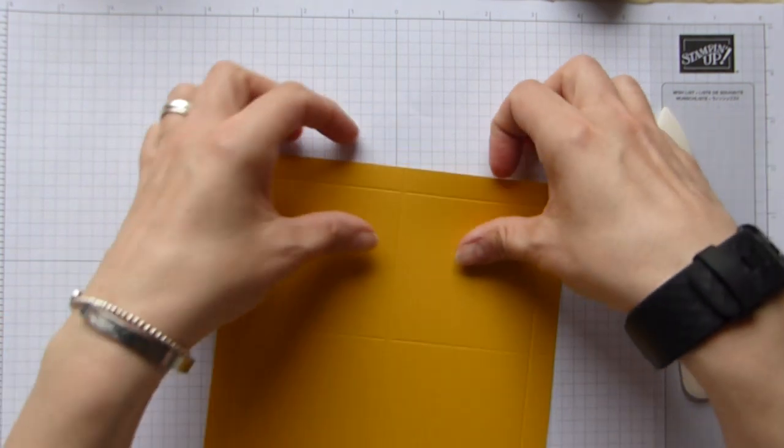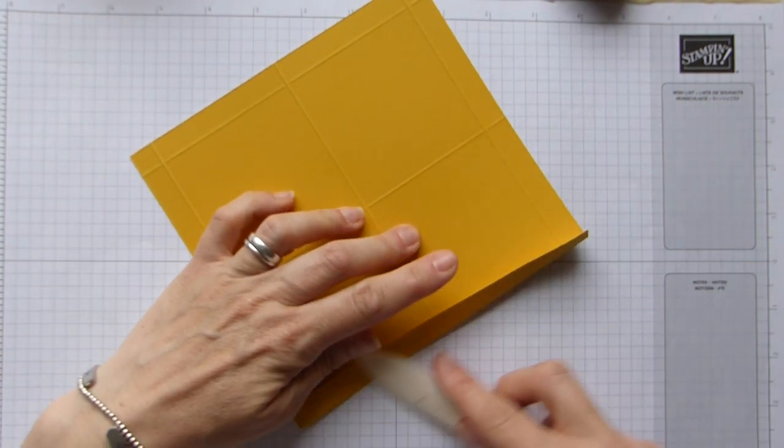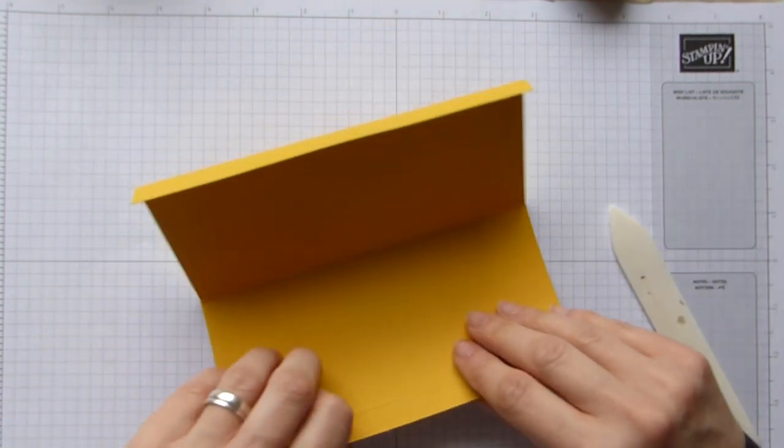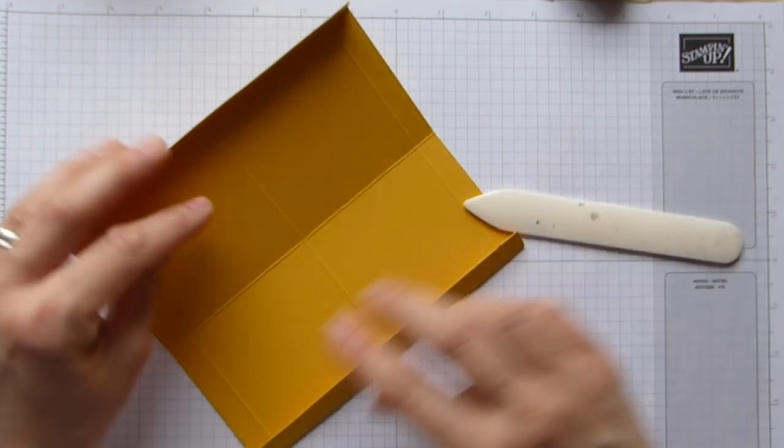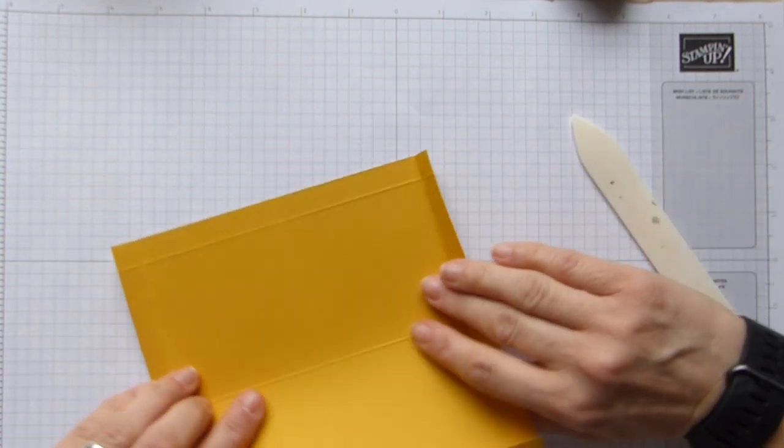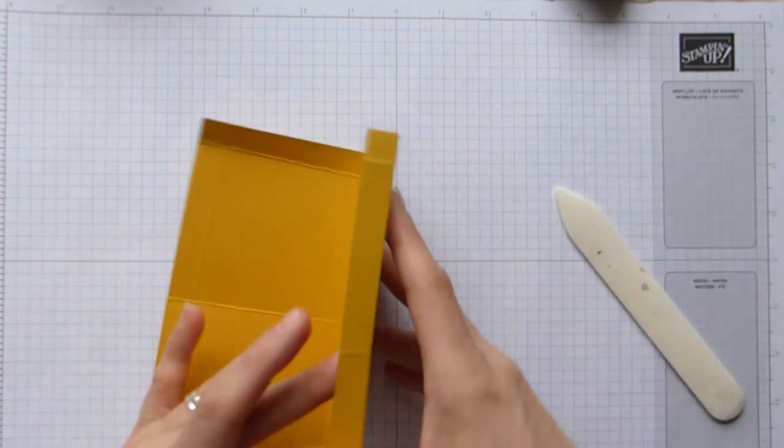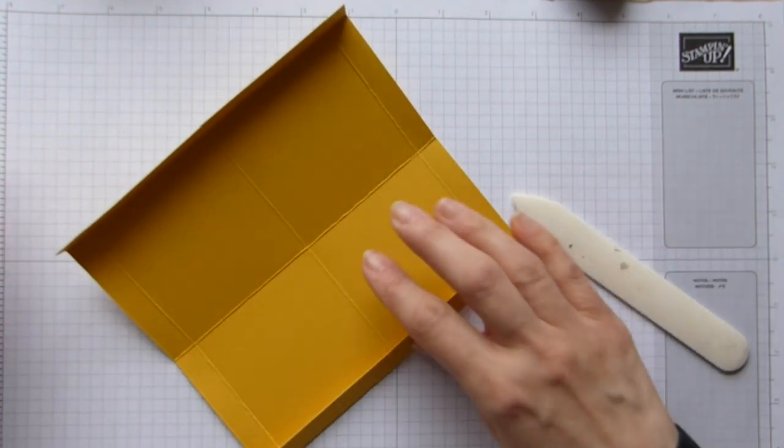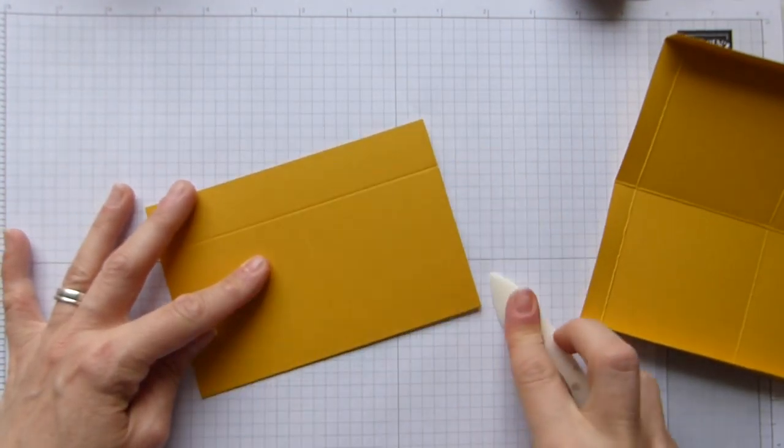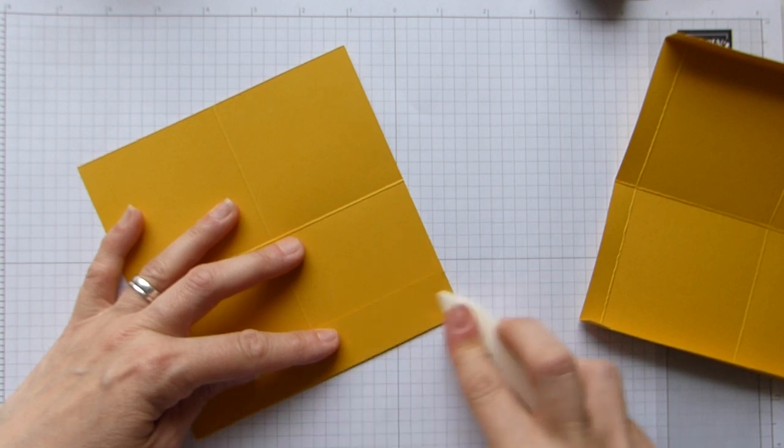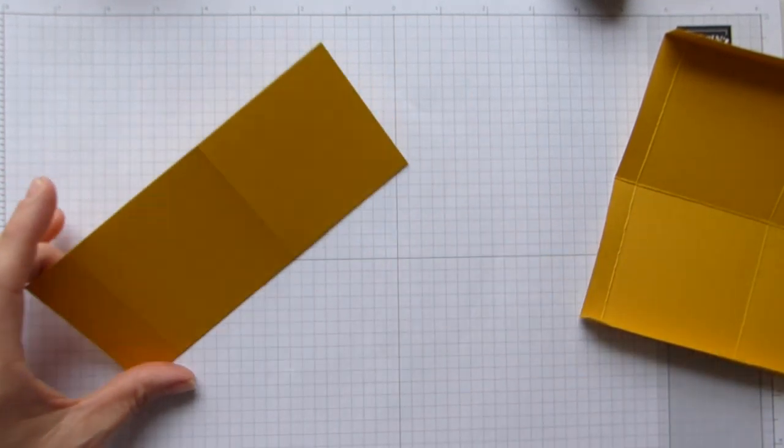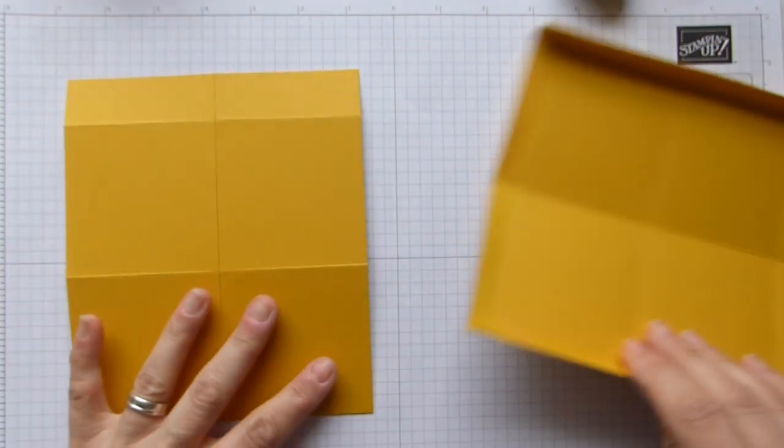So we can fold and burnish all of these score lines, and I do want to make the box up before I do the fancy fold scoring, just makes it easier for me to see where I'm going with everything. So piece A is the not square piece.